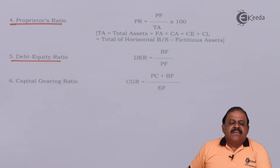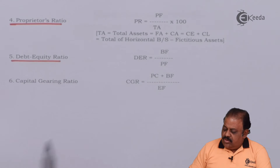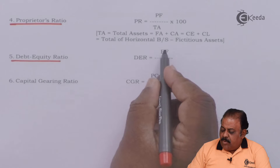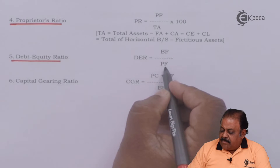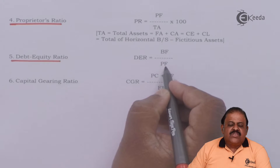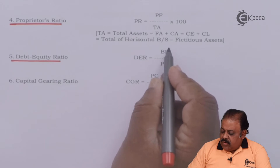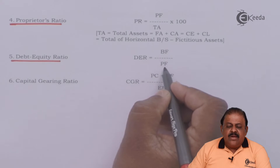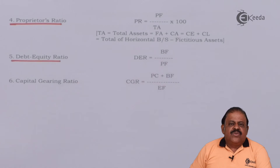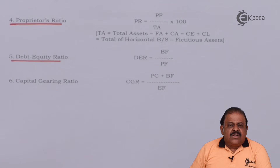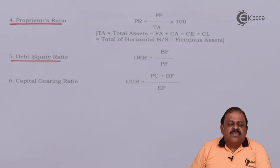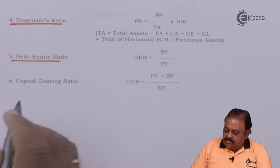The debt-equity ratio is debt divided by equity, that is borrowed funds divided by owners' fund or proprietors' fund. This ratio shows the long-term solvency position of the company and indicates the balance between owned funds and borrowed funds.